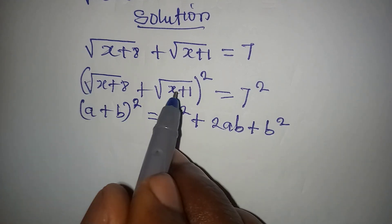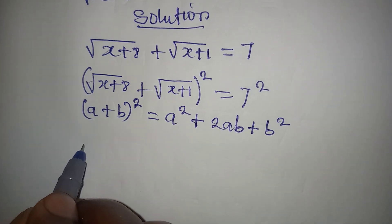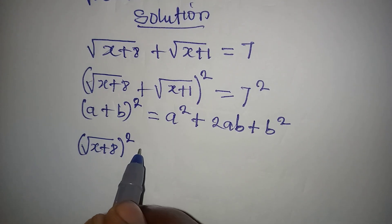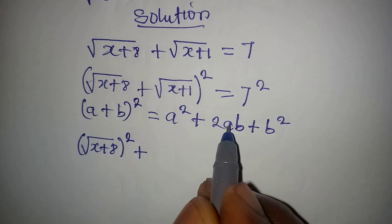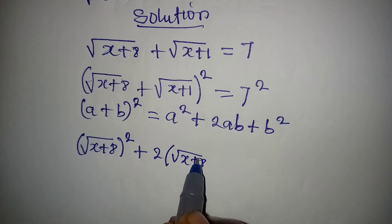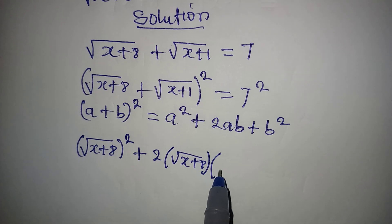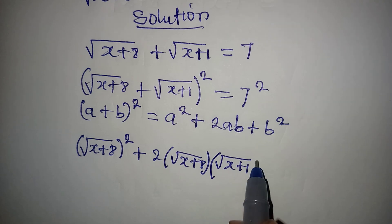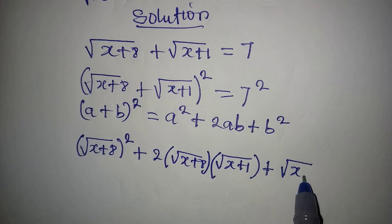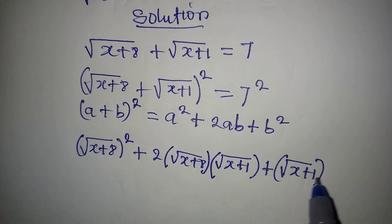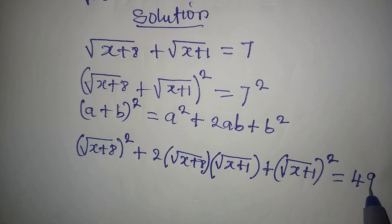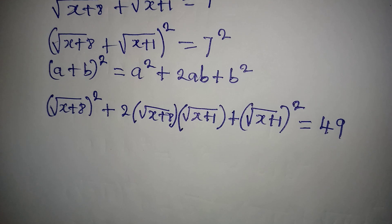Now I'm going to apply the same thing here. In place of a, I have square root of (x + 8), and this will be squared, then plus 2 times a, which is square root of (x + 8), times b, which is square root of (x + 1), then plus b squared, which is square root of (x + 1) squared. This is equal to 49, because of 7 squared.